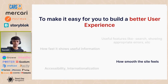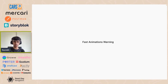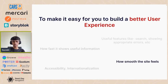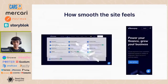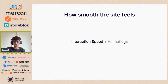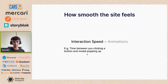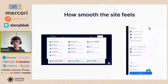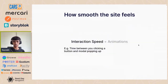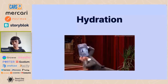Going back to the problem statement — the second point was how smooth the site feels. Smoothness depends on two things: interaction speed and animations. Interaction speed is the time between clicking a button and a modal popping up — the time between an action and getting output on screen. And animations matter too: a navbar that appears without animation won't feel smooth, but one that takes too long to load won't either. Solving for this smoothness takes us to our next topic: hydration.